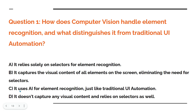Option C: it uses AI for element recognition, just like traditional UI automation. Option D: it doesn't capture any visual content and relies on selectors as well.